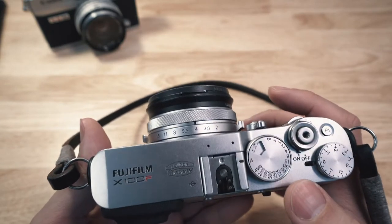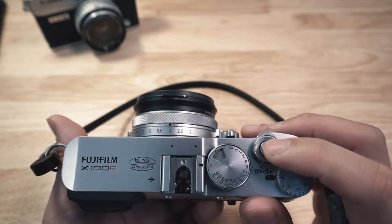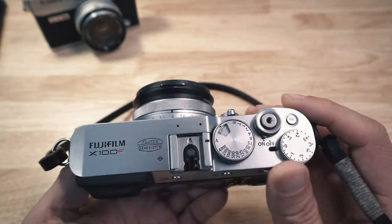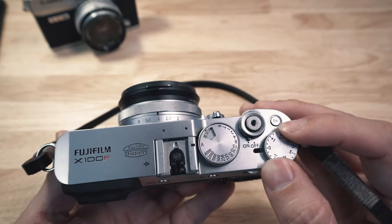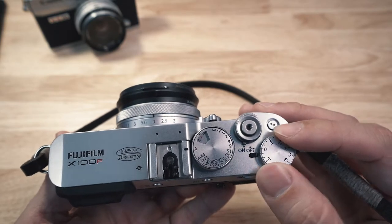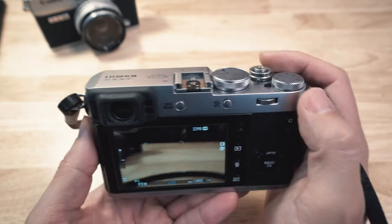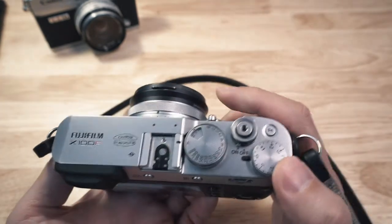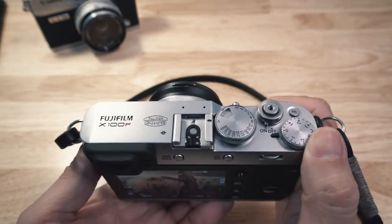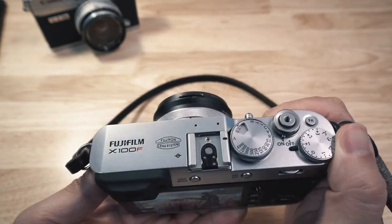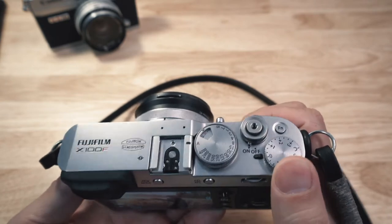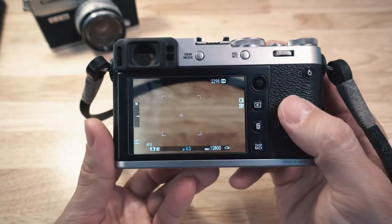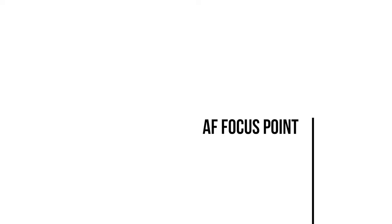That's basically one of three things I might adjust outside of just turning it on and shooting. The other thing I might adjust is the exposure compensation dial — if you have a brighter background and your subject is a little bit in the shade, you can always dial that in.